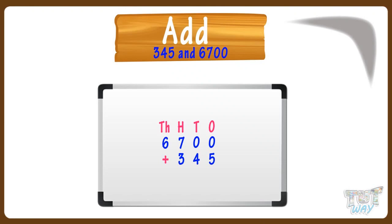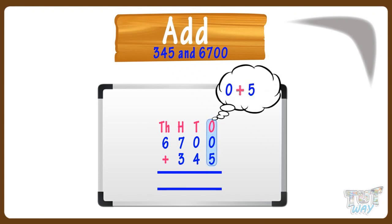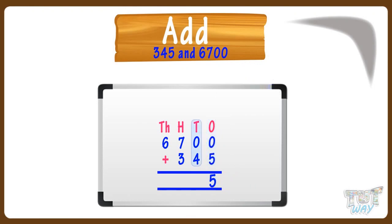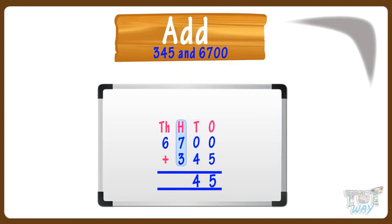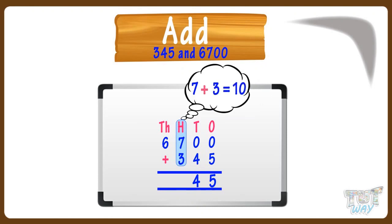Now, start adding the numerals from the ones place. 0 plus 5 equals 5, so write 5 here. Now, add the numerals at tens place. 0 plus 4 equals 4, so write 4 here. Now, add the numerals at hundreds place. 7 plus 3 equals 10.